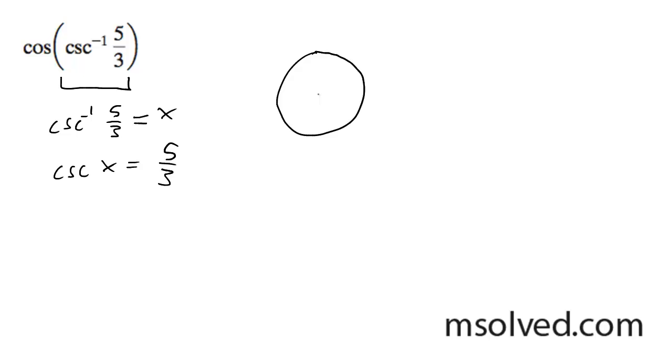So I know cosecant's r over y, so I know this is going to be 5, this is going to be 3. Actually it's going to be a little different than that. 5, 3.